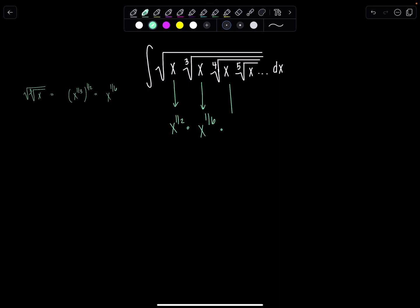And then same thing here, this fourth root of x is also underneath the cube root and the square root so it would be x raised to the 1 divided by 2 times 3 times 4 which is 24.